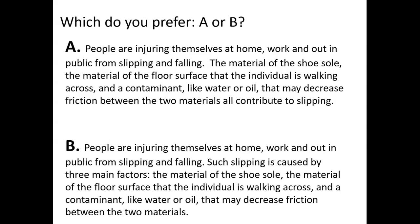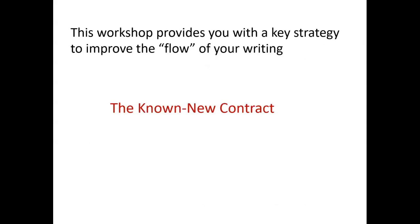The purpose of this workshop is to show you why version B works better and how you can make your writing more like that. We do this by using a key strategy that we call the known new contract. Before we return to that example, I'm going to show you how the known new contract works.